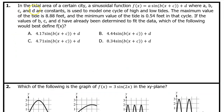Number 1. In the tidal area of a certain city, a sinusoidal function f of x equals a sine of b times x plus c plus d, where a, b, c, and d are constants, is used to model one cycle of high and low tides. The maximum value of the tide is 8.88 feet, and the minimum value of the tide is 0.54 feet in that cycle. If the values of b, c, and d have already been fit to the data, which of the following would best define f of x?